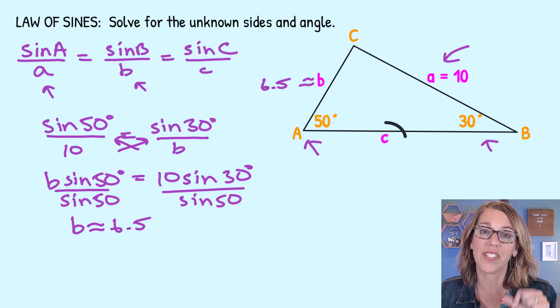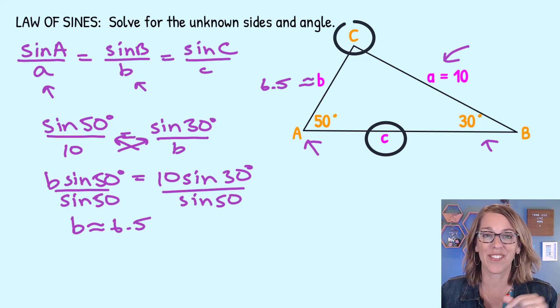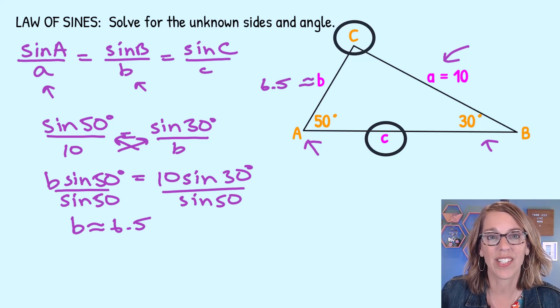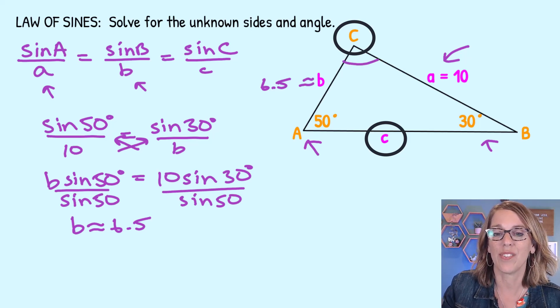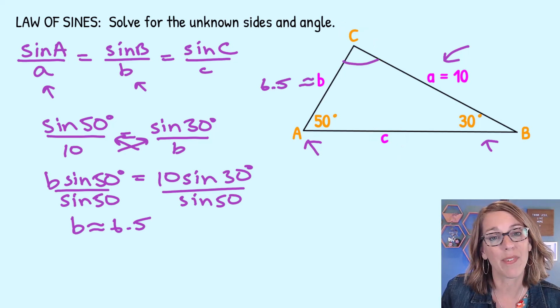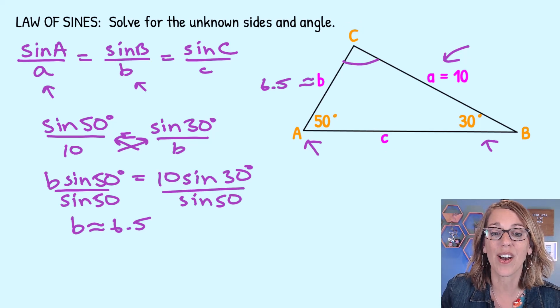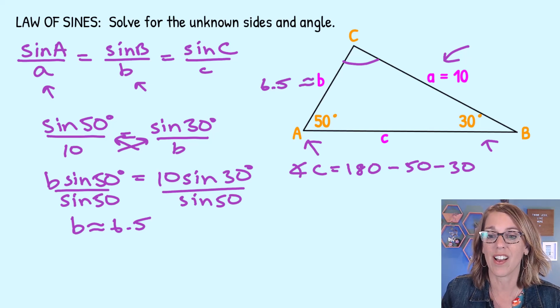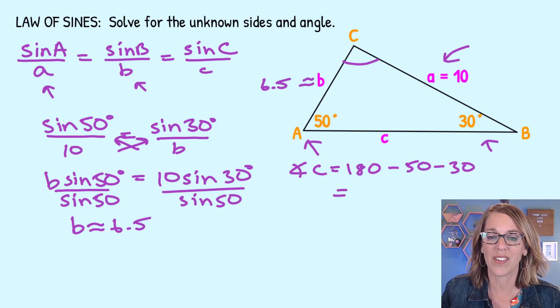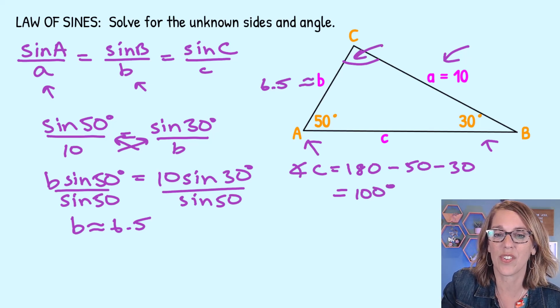Now I also need to find both side C and angle C. I can't find it using the Law of Sines right now, but I can go ahead and solve for angle C using what I've got. I know that the sum of my angles is equal to 180. So to solve for angle C, I'm going to take 180 and subtract the two angles that I've got, which is a 50 and a 30. And that leaves me with 100 degrees. So angle C is 100 degrees.